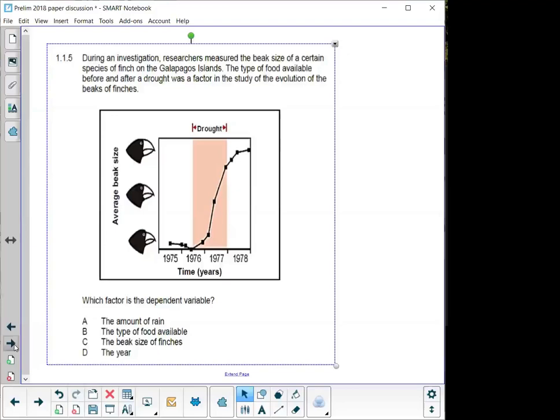But for an investigative question, you have to know less about the knowledge of what they are asking and more about the interpretation of it. So, in this specific question they're asking, they're saying, during an investigation, researchers measured the beak size of a certain species of finch in the Galapagos Islands. So, the Galapagos Islands are famous for where Darwin did a lot of his studies. It's not the only place where he did his studies on natural selection, but a lot of it was done in the Galapagos Islands because of the specific scenario that happened in the Galapagos Islands.